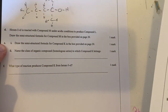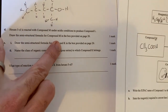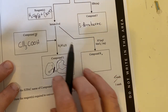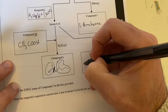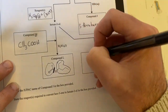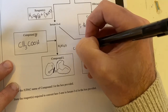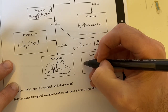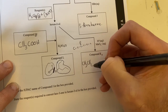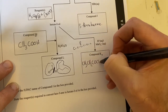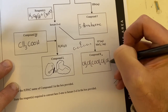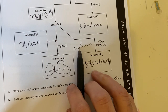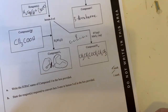Part E - draw the semi-structural formula for compound K. I've got hexan-3-ol and I'm oxidizing that using permanganate, so it's going to form a ketone. It's going to be C-C-C-C-C-C - one, two, three, four, five, six. On the third carbon there's going to be a double bond to O, so it's going to be CH₃CH₂COCH₂CH₂CH₃. I've got my semi-structural formula by writing out what I think the structure should look like and then converting it.